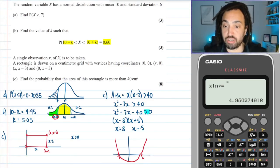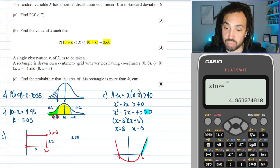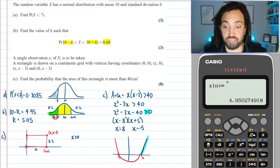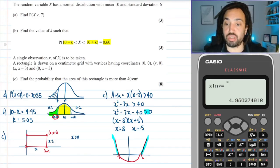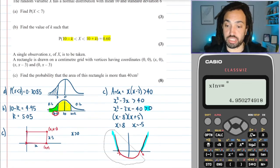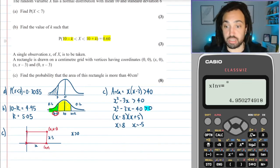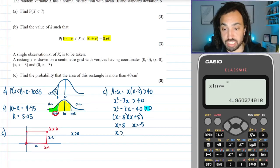So it looks something like this with those two roots there. And then where is this graph giving me values that are greater than 0? Well, it's if x is greater than 8—those values of y are above the axis—or if x is less than -5.